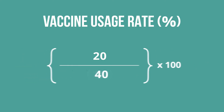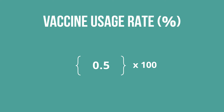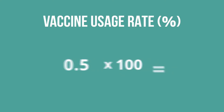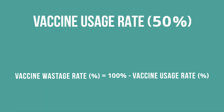Then divide the number of doses used by the denominator. 20 divided by 40 is 0.5. To calculate your vaccine usage rate, convert this to a percentage by multiplying 0.5 by 100, or 50%.